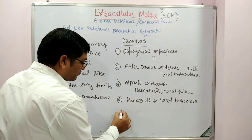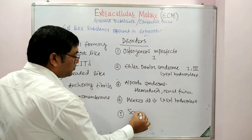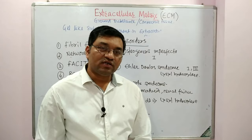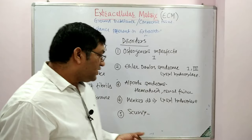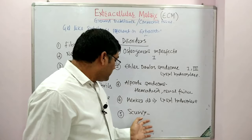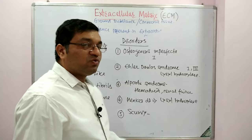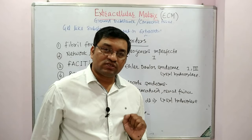The fifth disorder is scurvy. It is due to deficiency of ascorbic acid, which affects the hydroxylation process — specifically hydroxylation of proline and lysine is affected. This affects collagen cross-linking, causing capillary fragility, hemorrhagic tendencies, and bleeding gums due to defective collagen cross-linking.